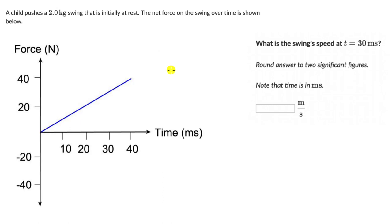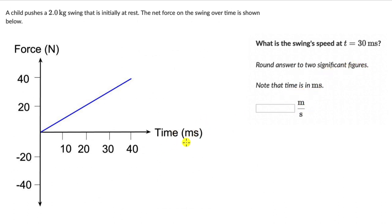Let's solve a couple of questions on change in momentum and velocity from force-time graphs. Here we have a child who pushes a 2 kg swing that is initially at rest. The net force on the swing over time is shown on a force versus time graph, with force in Newtons and time in milliseconds. The question is to figure out the swing's speed at 30 ms, rounding answers to two significant figures.